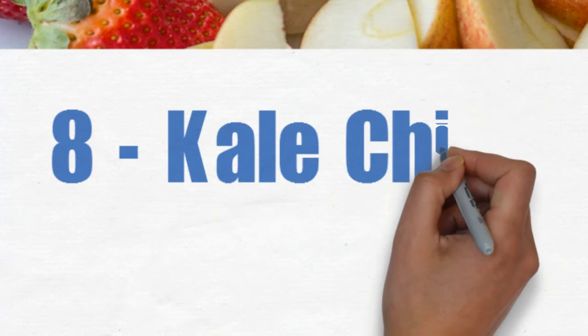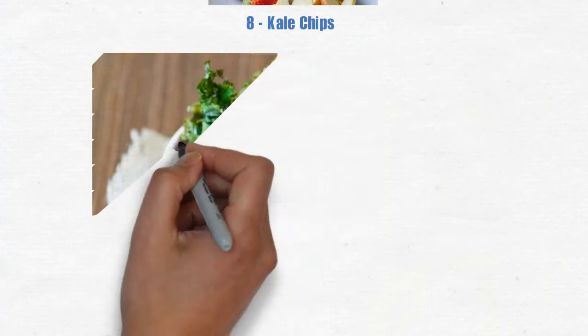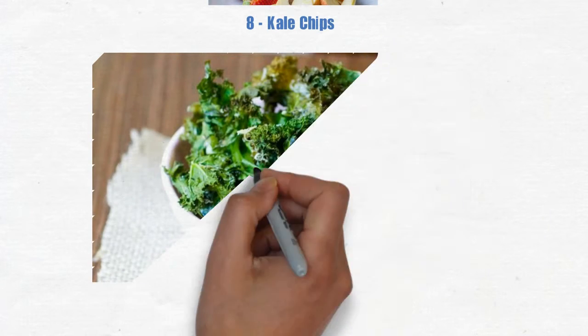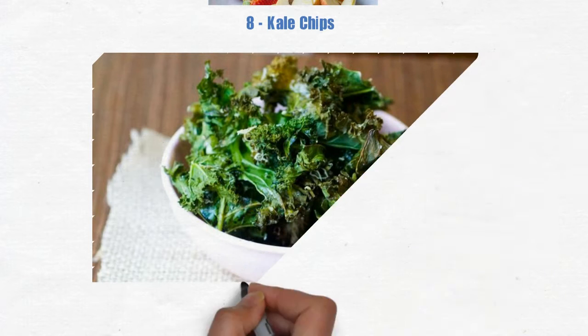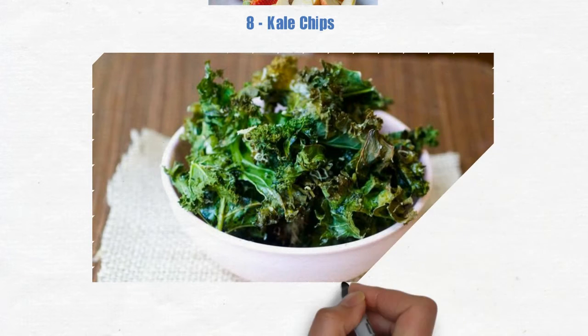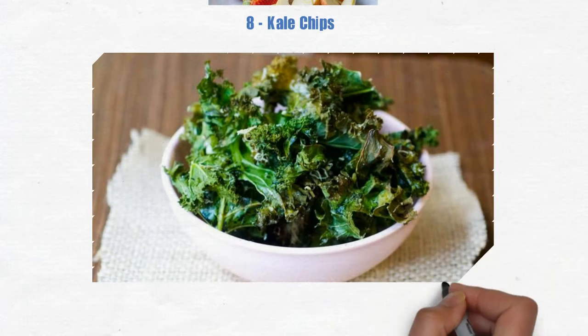8. Kale chips. If you've never had kale chips before, you're missing out. Kale is the most nutritious vegetable in the world and usually tastes icky. But put it in the oven covered in herbs and spices and you've got a great tasting snack.